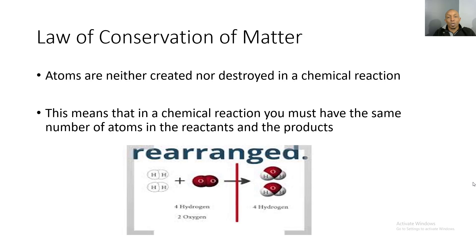When we talk about balancing chemical equations, we are going to be looking at the law of conservation of matter, which states that atoms are neither created nor destroyed in a chemical reaction. What this means is that in the chemical reaction you must have the same number of atoms in the reactants and the same number of atoms in the products. For example, if you look at the picture below, there are four hydrogen on the reactant side on the left side, and there are two oxygen on the reactant side. This yield sign shows that a chemical reaction is taking place.